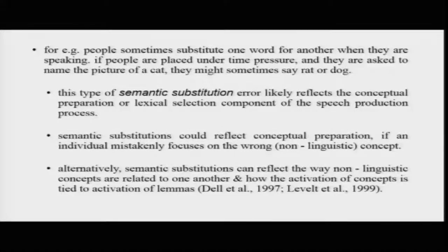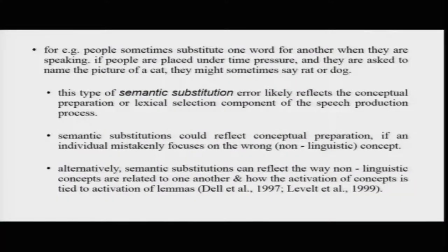Semantic substitution is when you replace the target word with another word from the same semantic category or closely semantically related to the target word. This type of semantic substitution error most likely reflects the conceptual preparation or lexical selection component of the speech production process. You went to select the lexical concept for 'cat,' but mistakenly selected the concept for 'rat' and said it. Everything else in the process remains error-free.